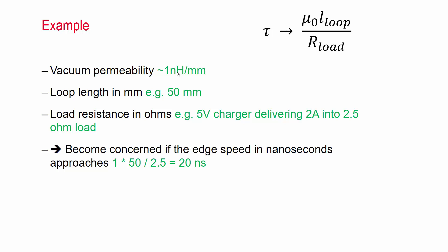So given this approach to units, we can plug in some numbers and see where we should become concerned. So the vacuum permittivity we say is 1 nanohenry per millimeter roughly. Loop length in millimeters to be consistent with units.